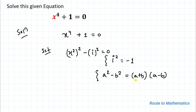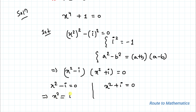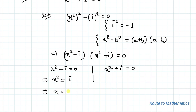Considering a as x squared and b as i, we can write this equation as x squared minus i, multiplied with x squared plus i, equals to 0. From here we get x squared minus i equals 0 and x squared plus i equals 0, which gives x squared equals i, implying x equals plus or minus root under i.